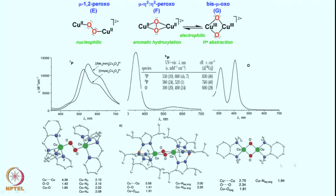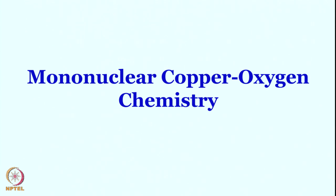You have different species that are completely crystallographically characterized. These species have direct relevance in hemocyanin, and they also have direct relevance in tyrosinase — in fact both of these copper cores are relevant in tyrosinase, as we have seen earlier. Let us now move on and discuss mononuclear copper-oxygen chemistry.